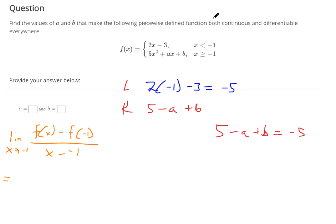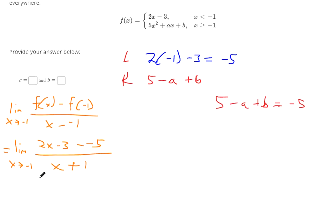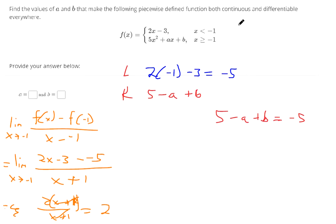For the left side, it's the limit as x approaches negative 1 for 2x minus 3, subtracted by negative 5, all over x plus 1. The numerator we're going to get is 2x plus 2 over x plus 1. Factor out a 2 and the x plus 1's cancel. Now it's just a constant 2. So the slope on the left side is 2.